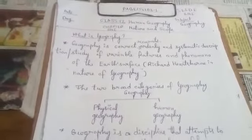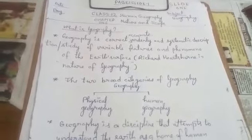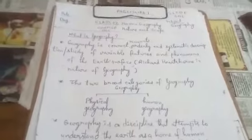A more authentic definition of geography is: geography is concerned with the correct, accurate, orderly, and systematic description of various features and phenomena of the earth's surface, as told by Richard Hartshorne in his monumental book Nature of Geography.